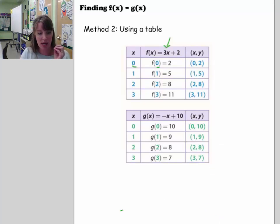And then what I noticed is that when f(0) is 2, but g(0) is not 2, it's 10. So that's not an ordered pair that's the same. It has the same first coordinate, but the second coordinate is not the same. The same thing happens with 1. f(1) is 5, but g(1) is 9. So that doesn't work out. Here we get to the value here, (2,8) and (2,8). f(2) is 8, and g(2) is 8. So I found the solution, the exact solution that satisfies both equations.